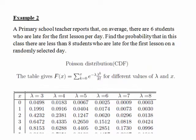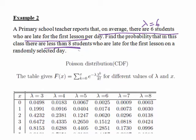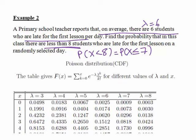Continuing with follow-on examples from the same scenario — on average 6 students are late for the first lesson per day, so lambda equals 6. In this second example, we want the probability that there are less than 8 students who are late on a randomly selected day. We're looking for the probability that x is less than 8. Since this is a discrete probability distribution taking only whole number values, the probability of x less than 8 is actually the probability of x less than or equal to 7. Since we're looking at a range of values, we use the CDF table for the Poisson distribution.